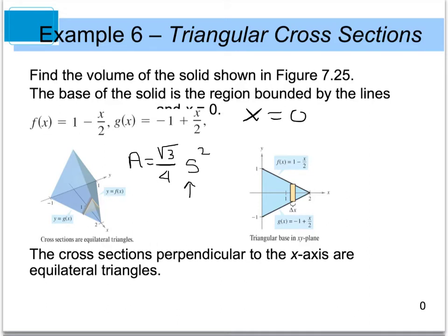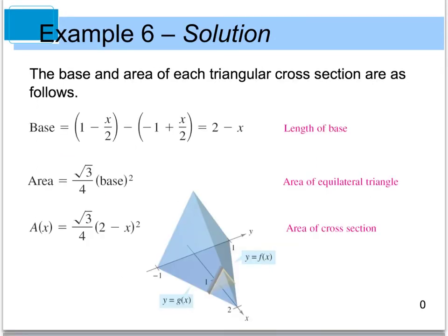Here s is just one of your side lengths. In this case, your length is going to equal one of these sides. We need to calculate the base length, which is going to equal one function minus the other — f minus g. When you subtract those two, you get 2 minus x for the length of your base. That's going to equal the side length of our equilateral triangle. Remember, in equilateral triangles all side lengths are the same. So when I calculate my area, I go square root of 3 divided by 4 times that base, which is 2 minus x, squared.